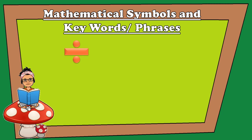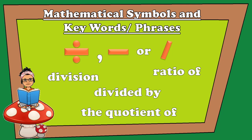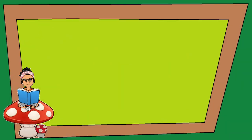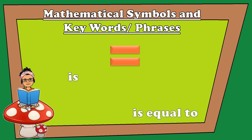For division symbols or fraction bars, you'll usually see keywords such as: division, the quotient of, ratio of, or divided by. And for the equals symbol, you'll usually see keywords such as: is, is equal to, or equals.